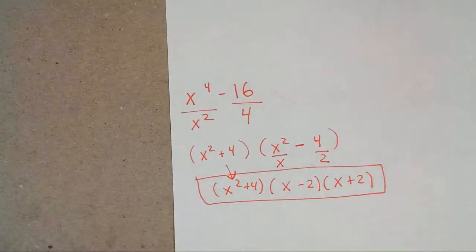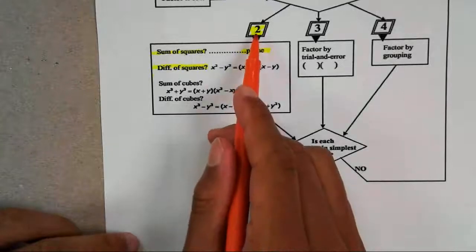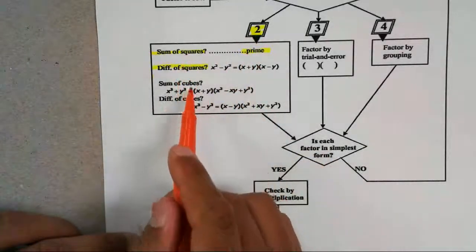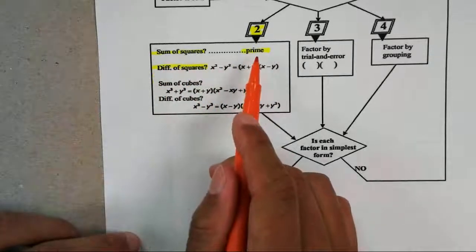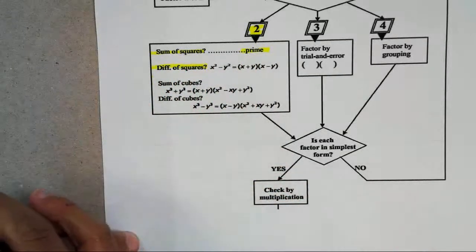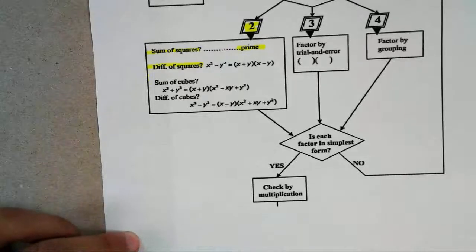This video was just focusing on what happens when you have two terms. It's either a square or a cube and we're working on just squares. Remember, sum of squares is always going to be prime and you could actually factor out a difference of squares by finding your bases. Alright guys, hope you liked it.